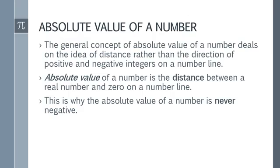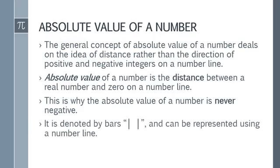There is no negative absolute value. Next, it is denoted by bars. If you see two bars with a number in between, that denotes an absolute value. And also it can be represented using a number line.